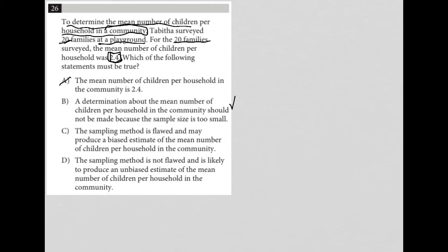So choice C says the sampling method is flawed and may produce a biased estimate of the mean number of children per household in the community. So C is actually a better answer than B.